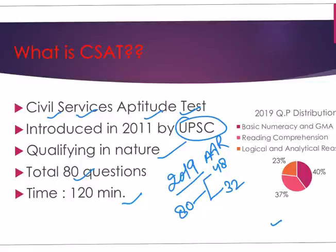You can see here 40 percent questions are from aptitude, 23 percent questions are from reasoning, and 37 percent from general reading comprehension. This is the basic idea of the CSAT paper.